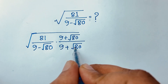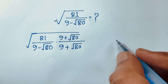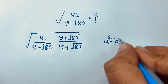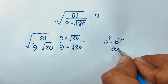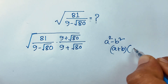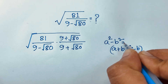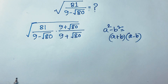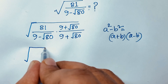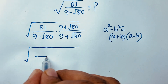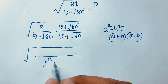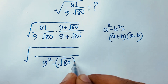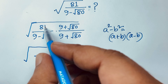It will be (a + b)(a - b) = a² - b². So we know that a² - b² = (a + b)(a - b). According to this formula, I can simplify this expression: it will be square root of 9² minus square root 80 whole squared, which gives 81.